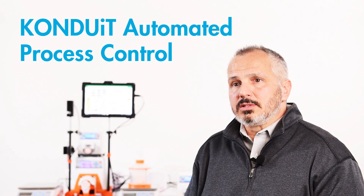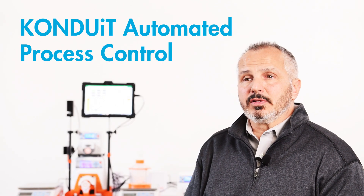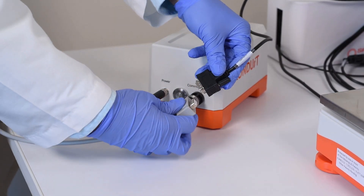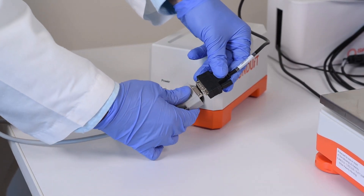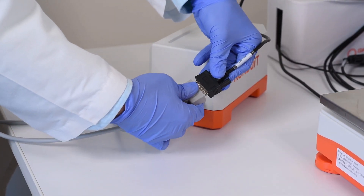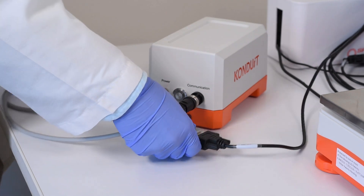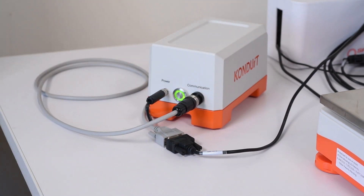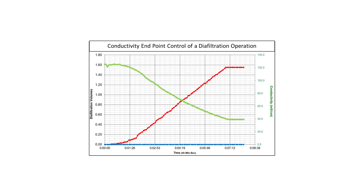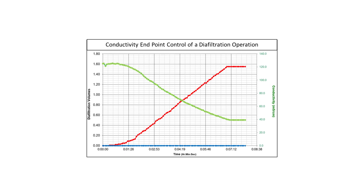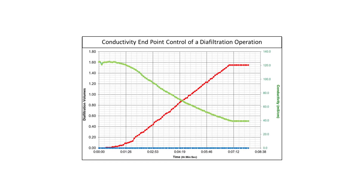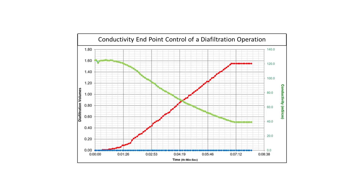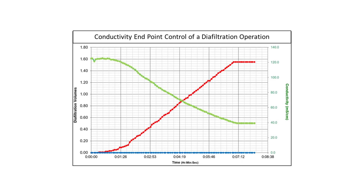The conduit adds additional benefits to the KR2i system. This auxiliary component provides feedback on both conductivity of the process stream or permeate stream, as well as temperature of that stream. It also has the ability to run up to two UV meters — both UV A280 as well as A260.